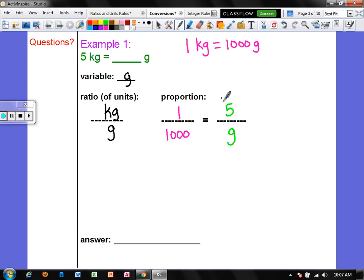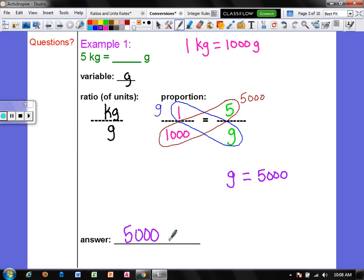Now we are going to cross multiply. So here we have one times the letter g, and that would simply just be g. And here we have 1,000 times five, that would be 5,000. So when I write this out, that means that g equals 5,000. Now in this type of problem, it's pretty simple. The variable is already isolated, there's nothing for us to solve. So our answer would be 5,000 grams.